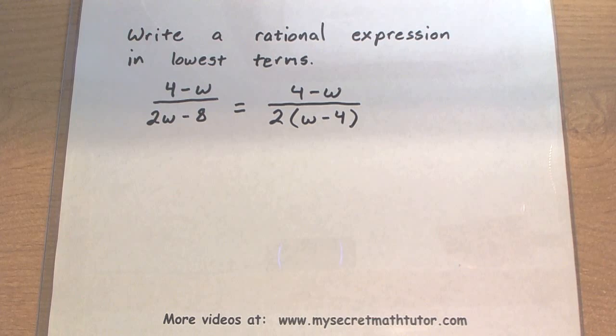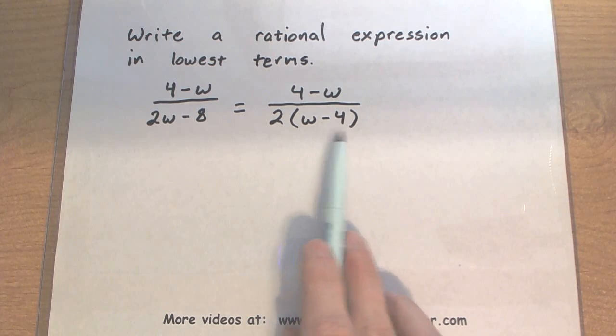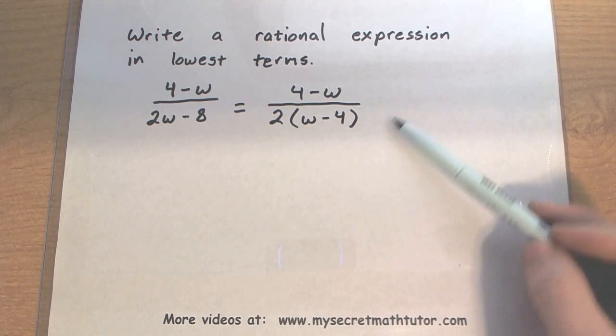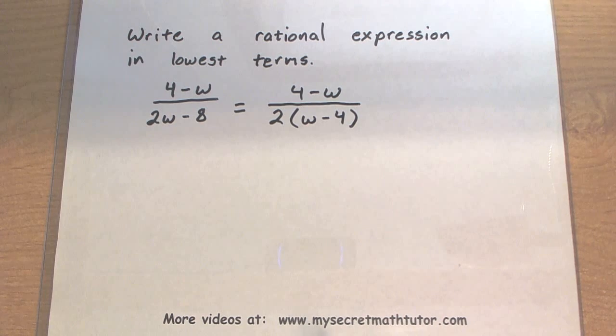Now, after factoring it out, I end up with this piece, w minus 4. And that looks pretty close to 4 minus w. But it's not the same, so I can't cancel it out just yet.